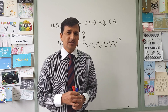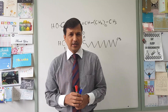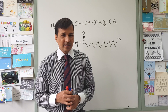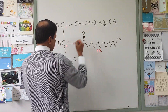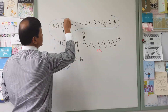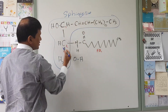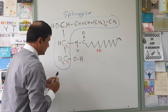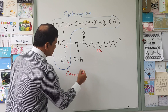Ceramide itself is synthesized from the amino acid serine and palmitoyl-CoA. Serine is a hydroxyl-containing amino acid, and palmitoyl-CoA is the most common saturated fatty acid synthesized in our body. Serine and palmitoyl-CoA condense with one another in the endoplasmic reticulum — especially the smooth endoplasmic reticulum — and will undergo a further reduction process to make ceramide. The entire sphingosine structure, to which a fatty acid is attached, plus the hydroxyl group on the third carbon, together form the ceramide molecule.